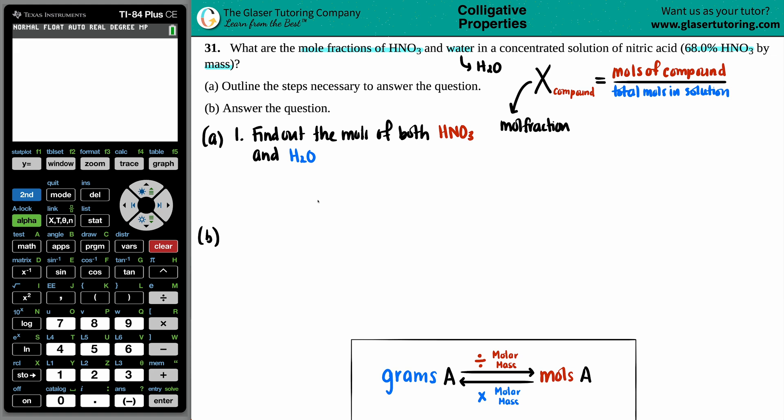Now, the only thing that they told us was that we have a 68.0% HNO3 solution by mass. And if something is by mass, that means that we're dealing with grams. But the formula for a percent, specifically a percent by mass, is always equal to a part over a whole times 100. Now, this is just a little bit different, because in this case, it's going to be the grams of the compound divided by the total grams in the solution.